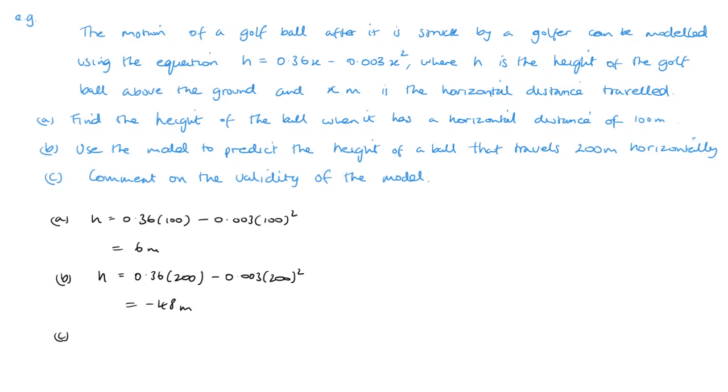Comment now on the validity of this prediction. The model is not valid as when x equals 200, the height would have it as 48 meters below ground level. And this is one of those cases where is your answer reasonable? No.